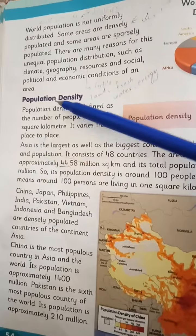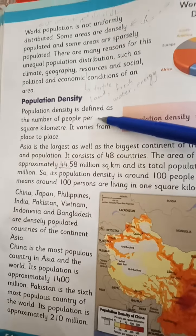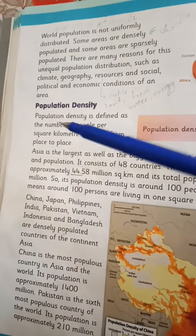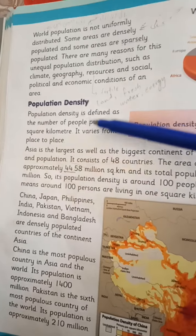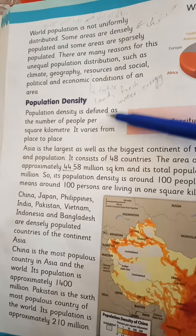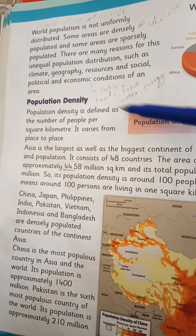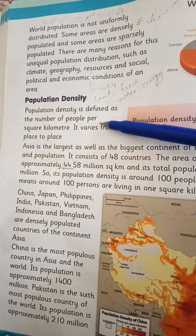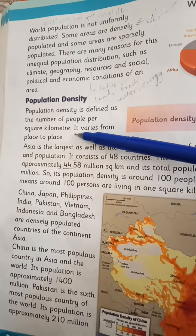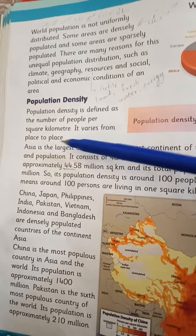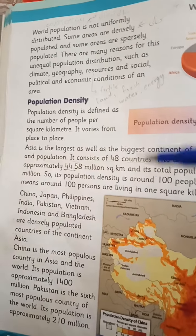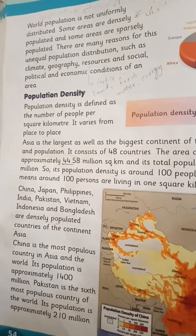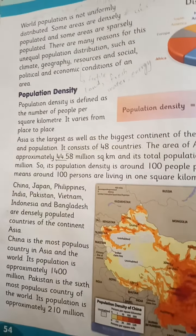Next is population density — how concentrated the population is and where. Population density is defined as the number of people per square kilometer. It varies from place to place. It means how many people are living within one square kilometer — that is what we call population density.